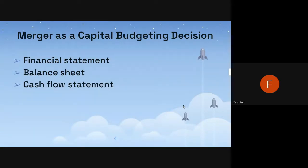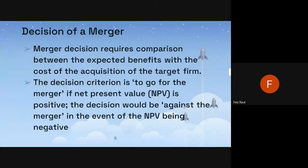In a merger, we need to analyze three things: financial statements, which include the profit and loss, trading account, balance sheet, and cash flow statements. All this information will be evaluated and we check the financial strength of the company using various methods — ratio analysis, market analysis, and different techniques of financial statement analysis — to decide whether to go with the merger or not, using net present value.